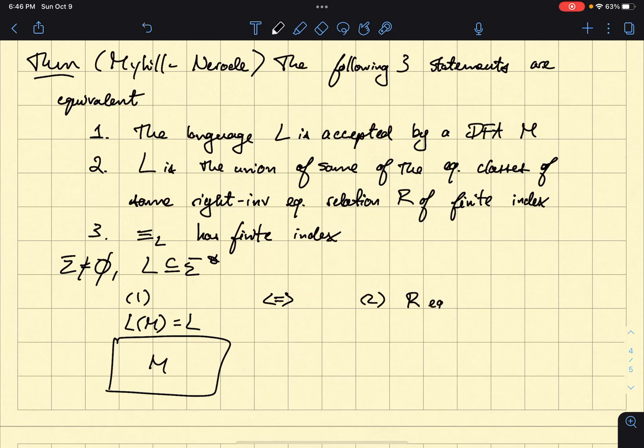Which is right invariant. Okay. And it says that I take R, which is an equivalence relation and it's right invariant. And so if it's an equivalence relation, what it means is that it takes sigma star and then it partitions sigma star using equivalence relations, using equivalence classes. Okay.